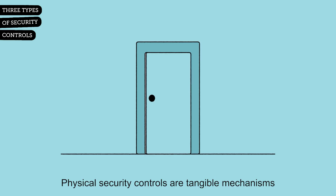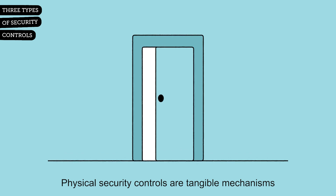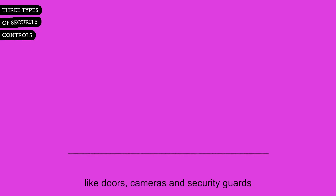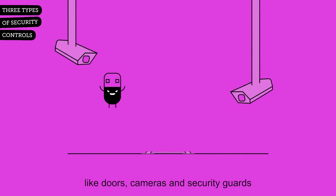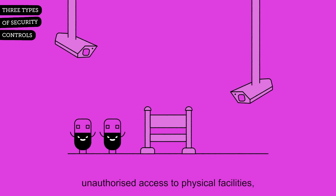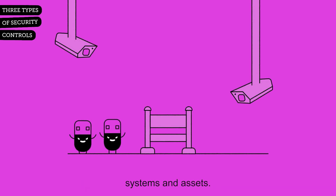Physical security controls are tangible mechanisms like doors, cameras and security guards, designed to deter or prevent unauthorized access to physical facilities, systems and assets.